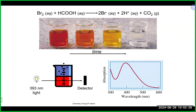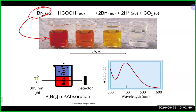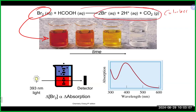One way to follow the change in concentration over time is if the reaction involves a colored solution. For example, Br₂ has a distinct color while the other species are colorless. The beaker at the very start of the reaction shows a lot of Br₂ and is highly colored. As the reaction proceeds and products are made, the color becomes lighter and lighter until it's essentially colorless, indicating the reaction is nearly complete.